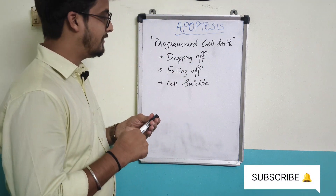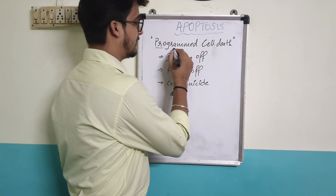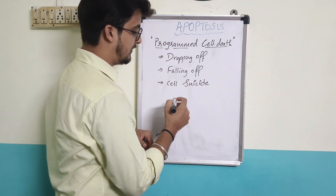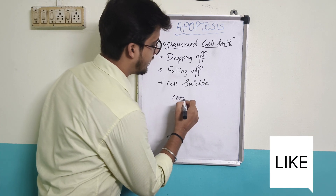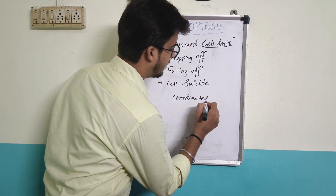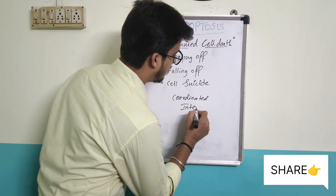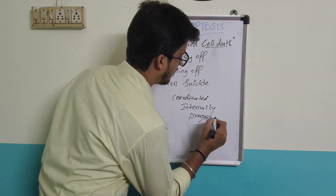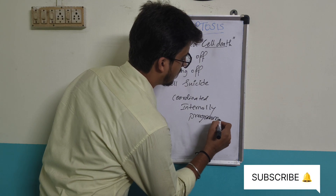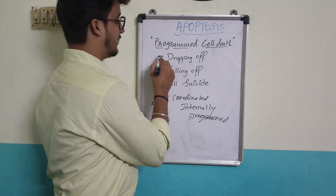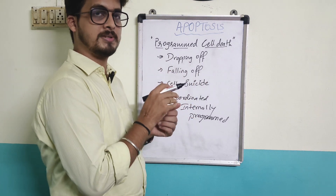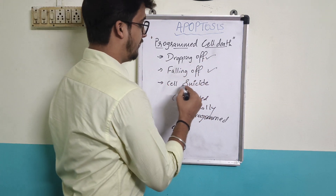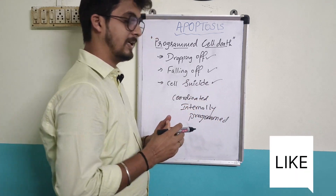So what is apoptosis? Apoptosis is nothing but programmed cell death. The definition of apoptosis is defined as coordinated, internally programmed cell death. It is also called cell suicide.